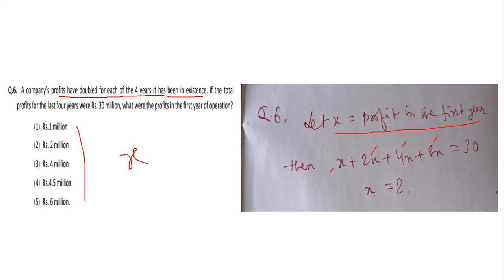Total profit is x + 2x + 4x + 8x = 15x. We are given that 15x = 30 million, so x = 2 million. Option number 2 is the correct answer here.